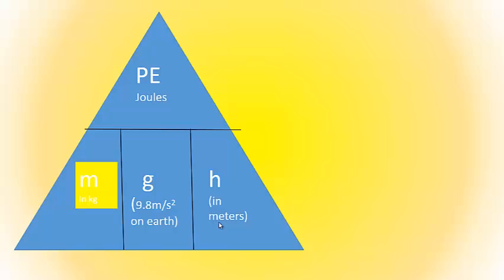So, how we would write this is we follow what we have. So, mass equals potential energy, since potential energy is at the top, we'd put that on our top, divided by, this is due to the line here, separating our levels, gravity times height.